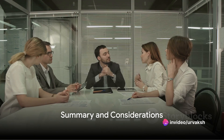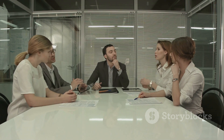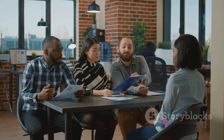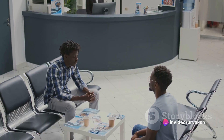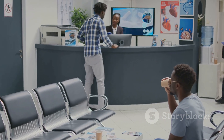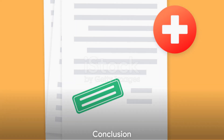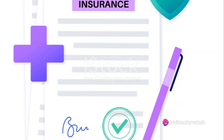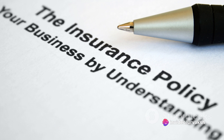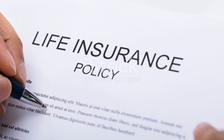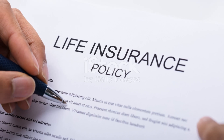In summary, group term life insurance is a type of life insurance that provides coverage to a group of individuals for a specified term. It's cost-effective, accessible, and can be a valuable part of a comprehensive benefits package. However, it's important to consider the potential limitations and ensure it aligns with your individual needs and circumstances. Now armed with this knowledge, you're one step closer to making an informed decision about your life insurance needs. Remember, knowledge is power, and understanding how group term life insurance works is an important part of planning for your financial future.